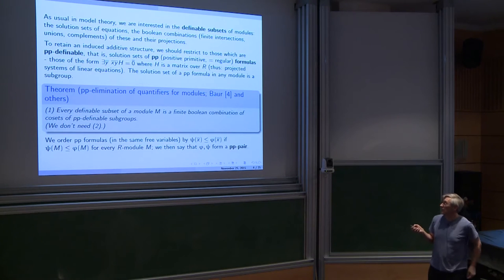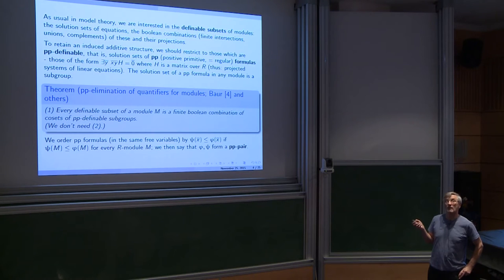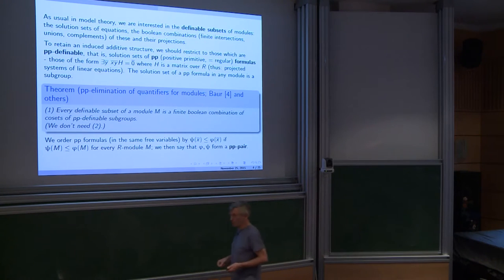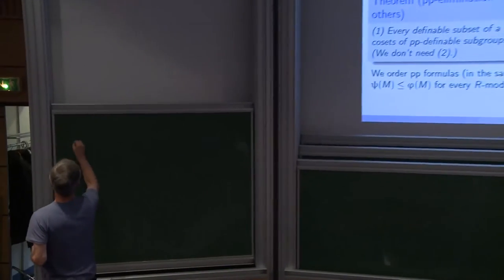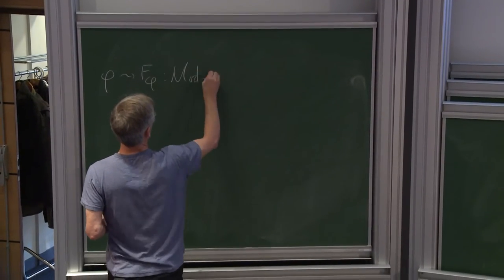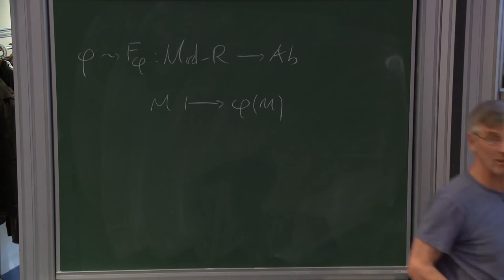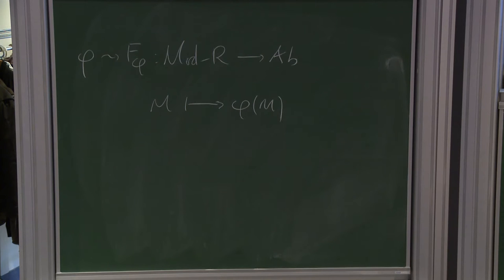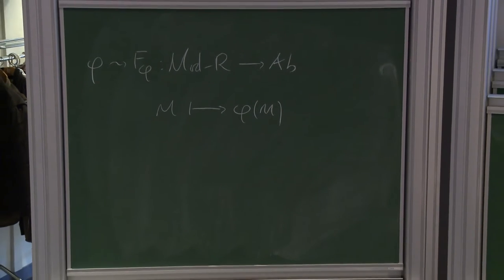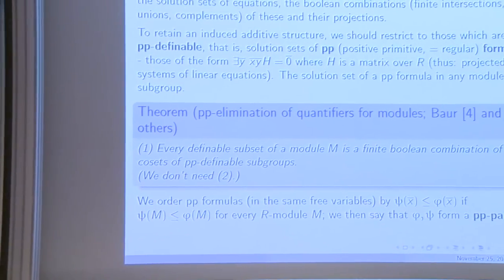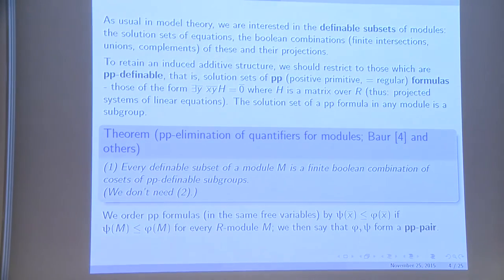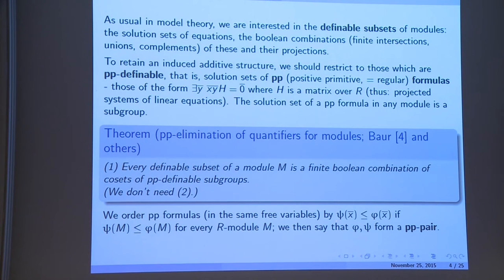There's a natural ordering on PP formulas. One of these formulas defines an additive functor from the category of R-modules to the category of abelian groups: you take a formula φ and define the corresponding functor by taking each module to the solution set of that formula in that module. Because the formula is PP, the solution sets are preserved by morphisms, so it is a functor. We order our formulas according to the ordering on the solution sets — we write ψ ≤ φ if in every module their solution sets are ordered that way, i.e., ψ is a sub-functor of φ.